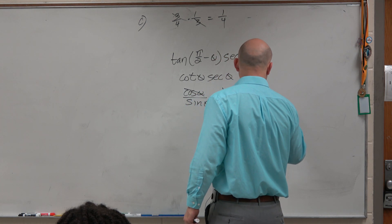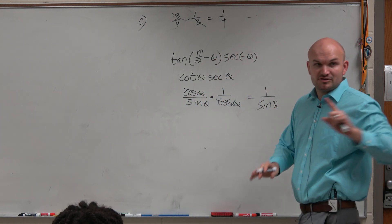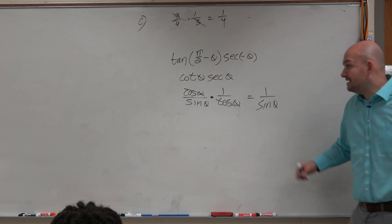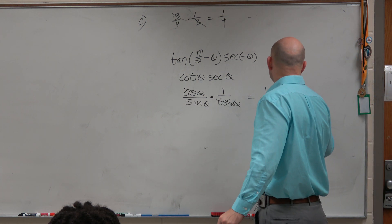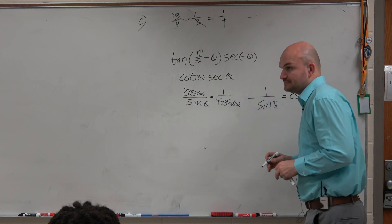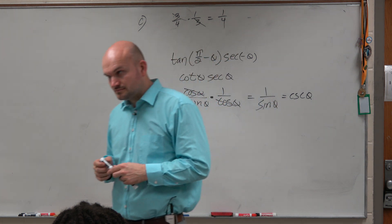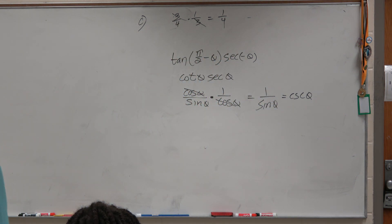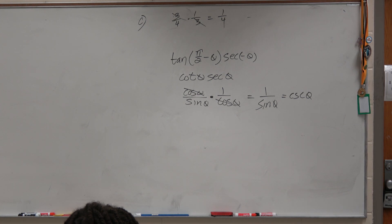So I'll be left with 1 over sine of theta, which by using my reciprocal identity again, I can rewrite this as cosecant of theta, which I would say would be pretty simplified in my case. Pretty well simplified.